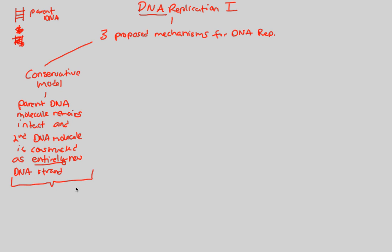The conservative model works as follows. I have a parent molecule of DNA — the most rudimentary ladder-like structure, with sugar phosphate backbones on either side and nitrogenous bases in the middle, two strands combined via hydrogen bonds. The second DNA molecule is constructed as an entirely new DNA strand.